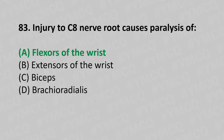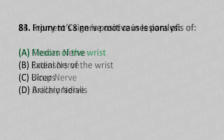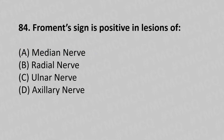Moving to our 84th question. Froment's sign is positive in lesion of: option A median nerve injury, option B radial nerve injury, option C ulnar nerve injury, option D axillary nerve injury. The answer is option C, ulnar nerve injury.